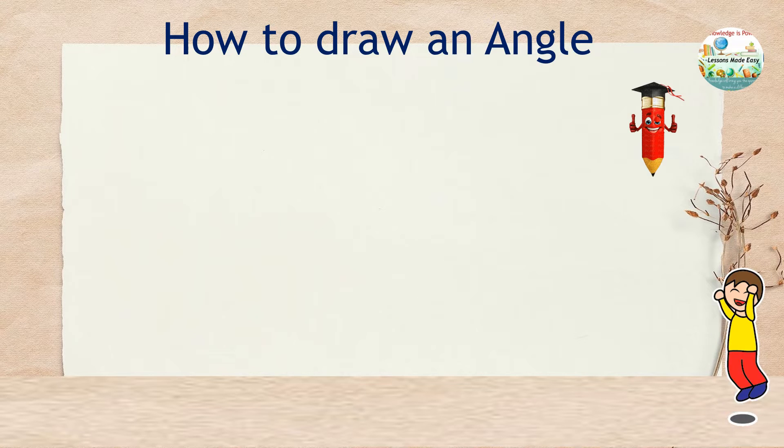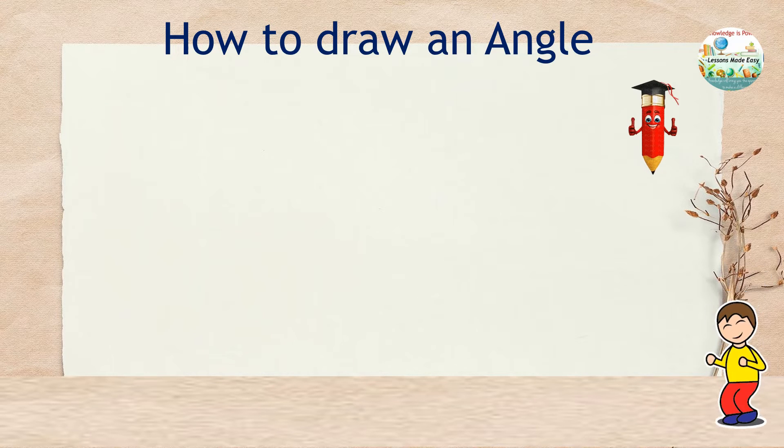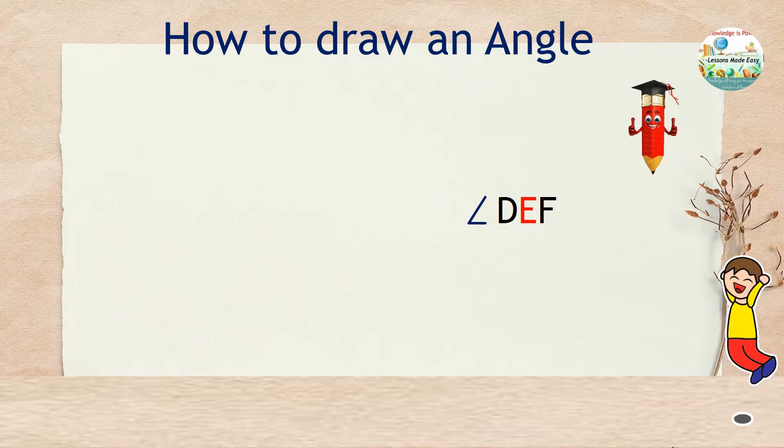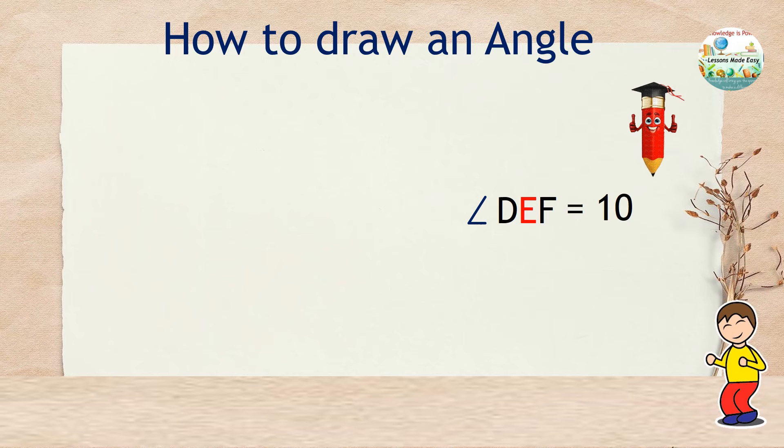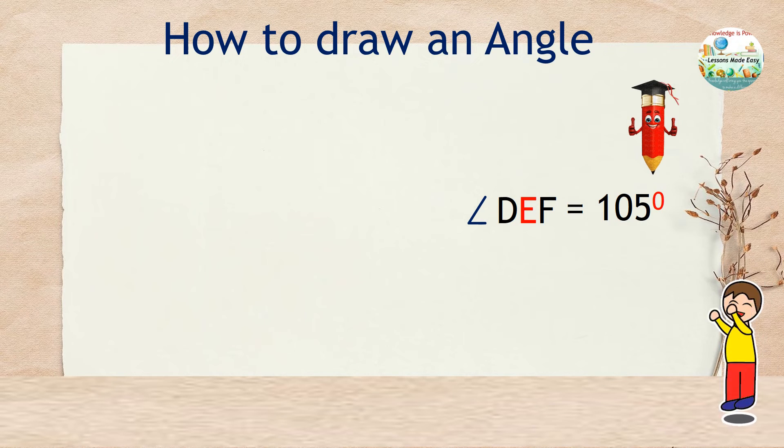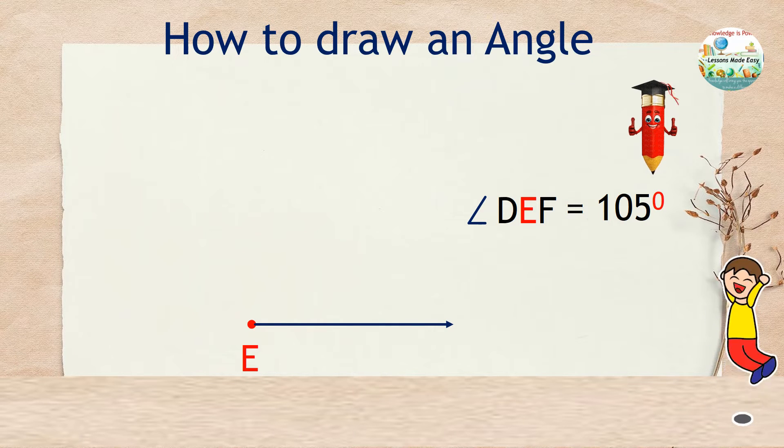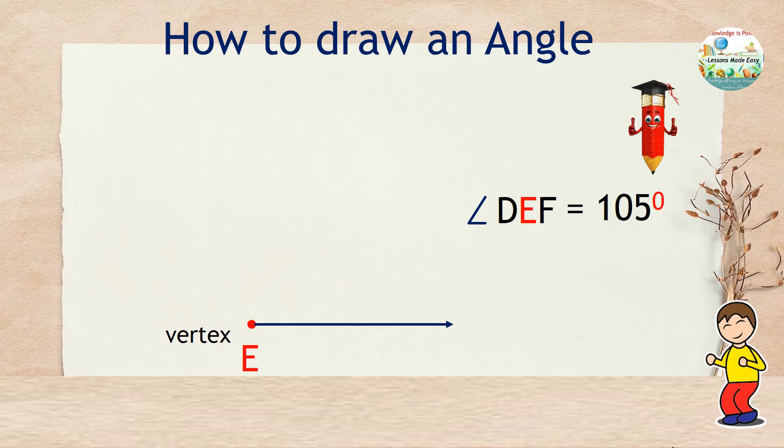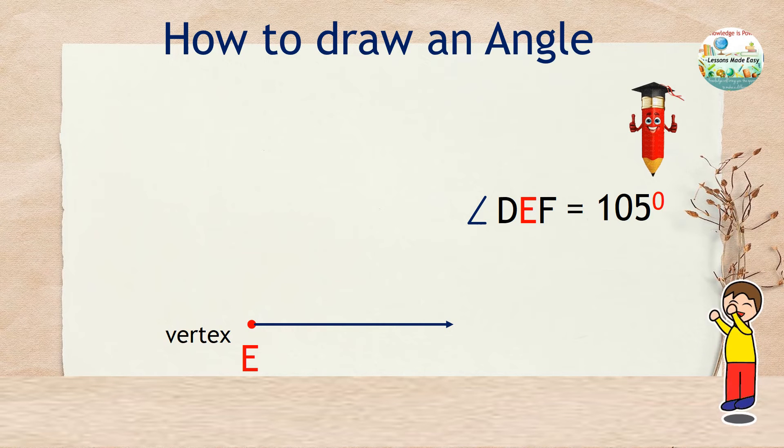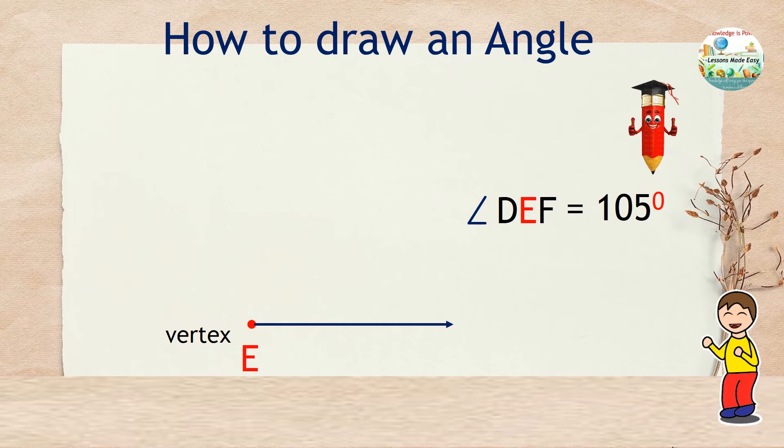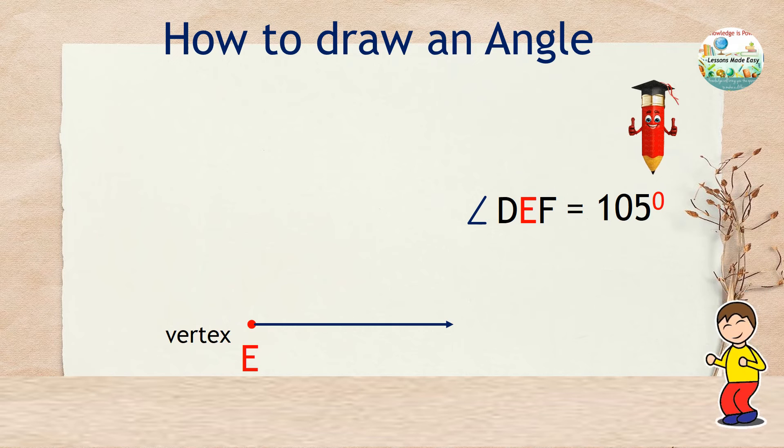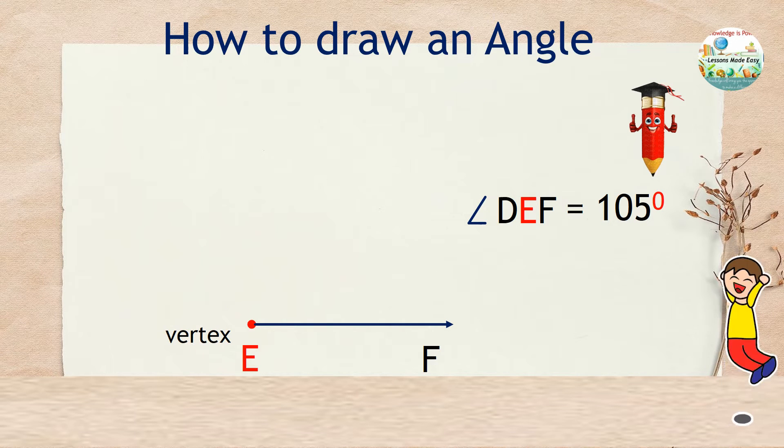Let's try drawing an angle using the inner scale. Draw angle DEF whose measurement is 105 degrees. Just the same, start by drawing a ray and name the endpoint E as it is the vertex of the angle. Then the other can be D or F. Doesn't really matter. Let's just have this as point F.